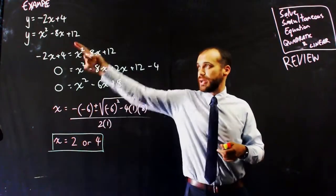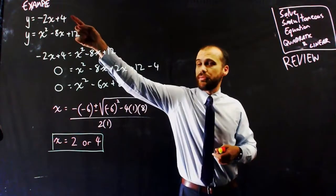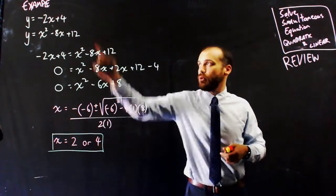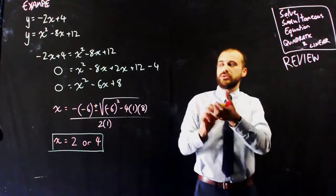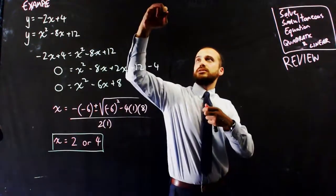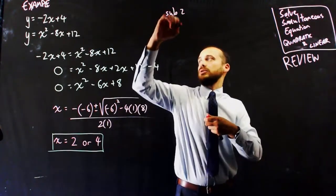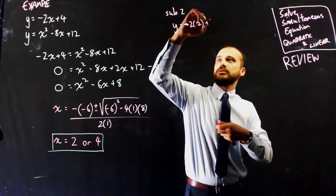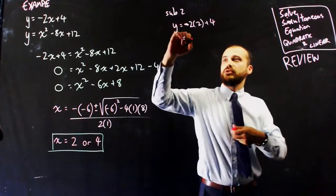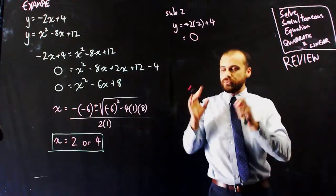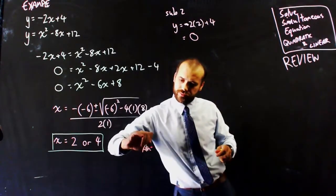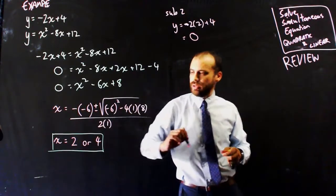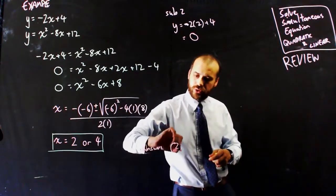We need to sub 2 back into one of these equations. This is going to be the easier one. And we need to sub 4 back into that equation. So, subbing 2, we get y = -2(2) + 4, which is -4 + 4, which is 0. So one of the points, one of the answers, is (2, 0).